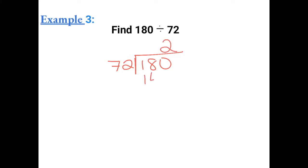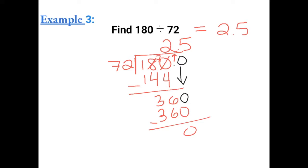72 times 2 gives us 144. So now we're going to subtract. We have to borrow. 10 minus 4 gives us 6. 7 minus 4 gives us 3. So now we have to add a decimal and add a 0 and bring down the 0. So now 72 goes into 360, 5 times. Now we have to carry up the decimal. 72 times 5 gives us 360. So we have no remainder. So 180 divided by 72 is 2.5.